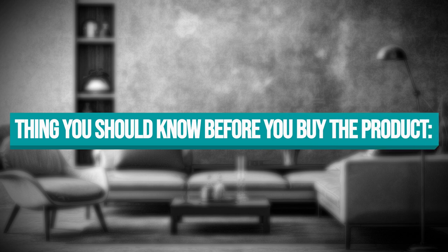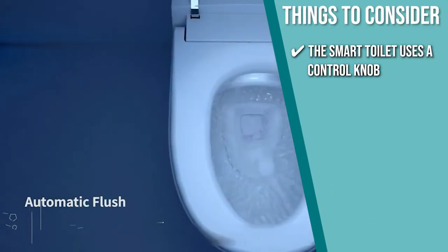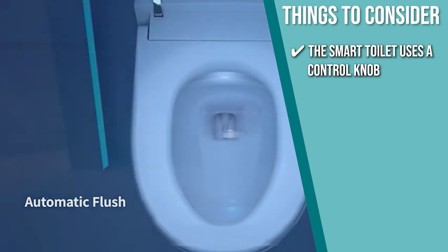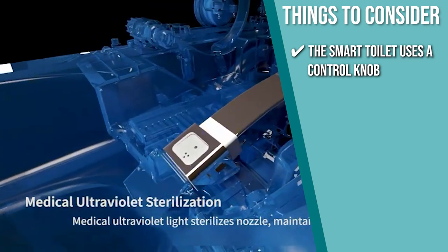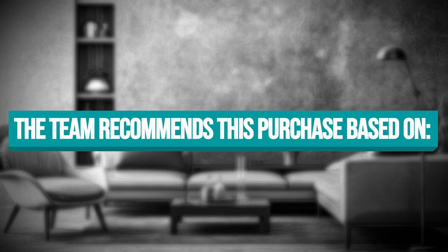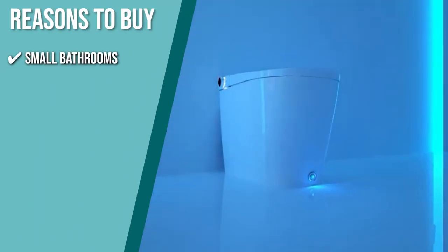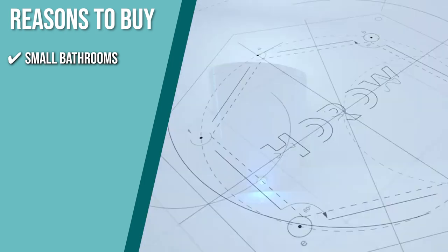Keeping all of that in mind, the thing you should know before you buy the product is, instead of a control panel, the Smart Toilet uses a control knob which limits your control, but the included remote control has all the settings you need. The Trusted Shopping Guide team recommends this for small bathrooms since its tankless design will definitely save you space.